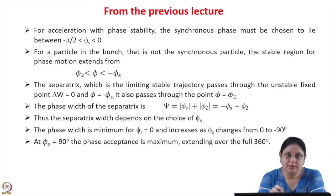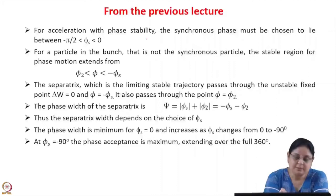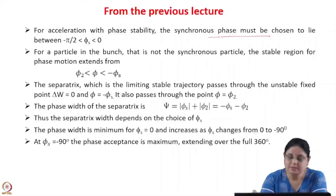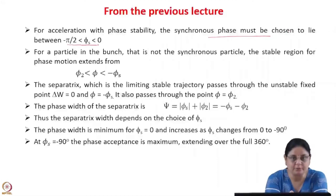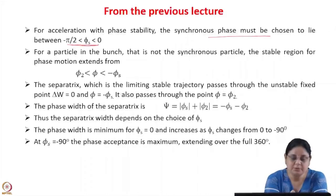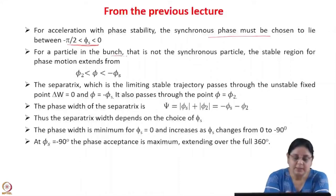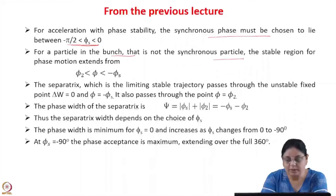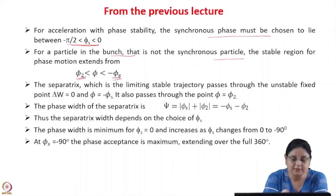In the previous lecture, we learnt that for acceleration using time-varying fields, for phase stability, the synchronous phase of the time-varying field must be chosen to lie between minus pi by 2 and 0. So even though there is acceleration for the entire positive part, which lies between minus pi by 2 and pi by 2, for phase stability the synchronous phase must be chosen to lie between minus pi by 2 and 0. For a particle in the bunch that is not the synchronous particle, the stable region for motion extends from some value phi 2 to minus phi s.